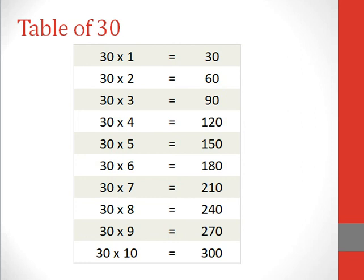30 7s are 210, 30 8s are 240, 30 9s are 270, 30 10s are 300.